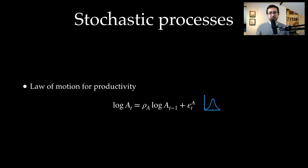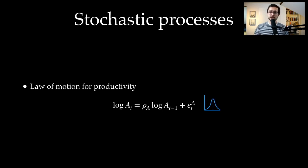There are also stochastics in the model. Productivity — total factor productivity — is the driving force of the economy. It evolves according to an autoregressive process with persistence parameter rho_A and a TFP shock epsilon_A. This shock is typically drawn from a normal distribution with mean zero and some standard deviation.